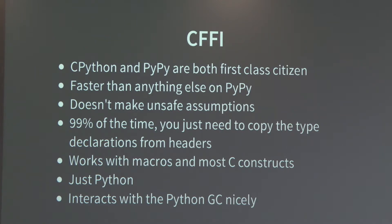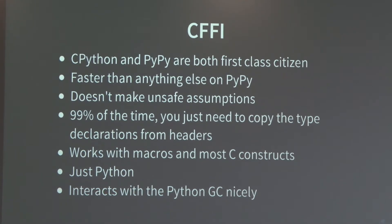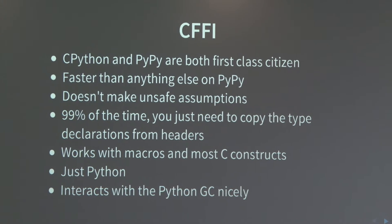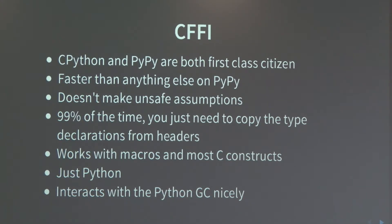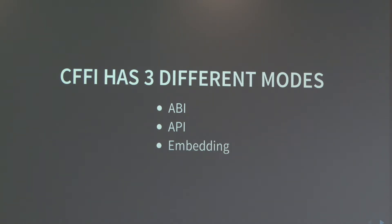The way you handle memory in CFFI is pretty much the same as you would with any other Python object, which can have a few pitfalls I'm going to talk about later. But it's pretty much the way you would expect it to work in Python. There are three different modes that have different use cases: ABI, API, and embedding. We're going to look at all three.